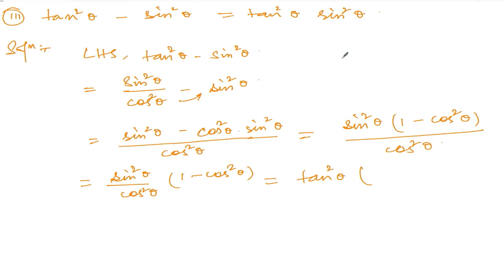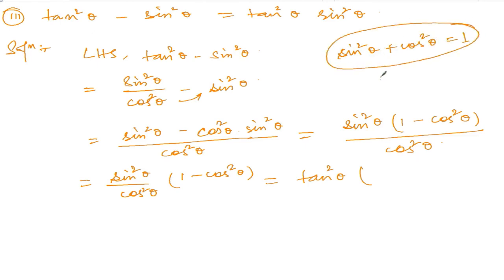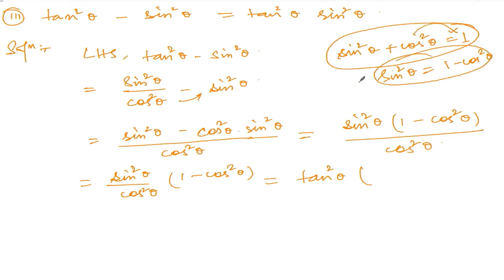Now, 1 minus cos square theta — you know the formula: sin square theta plus cos square theta equals 1. From this, sin square theta equals 1 minus cos square theta. So we can substitute 1 minus cos square theta with sin square theta.